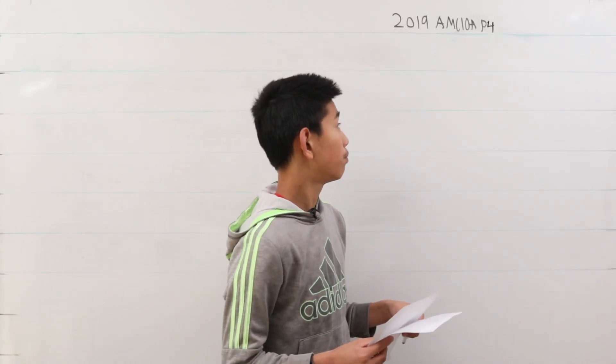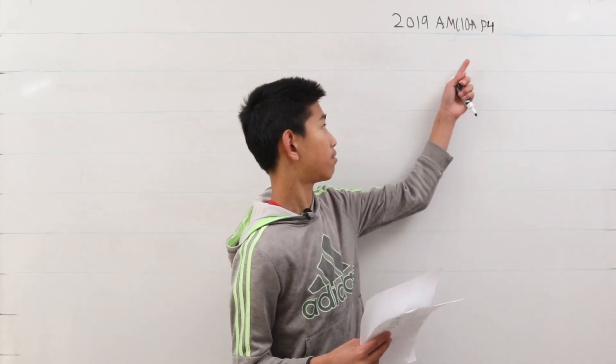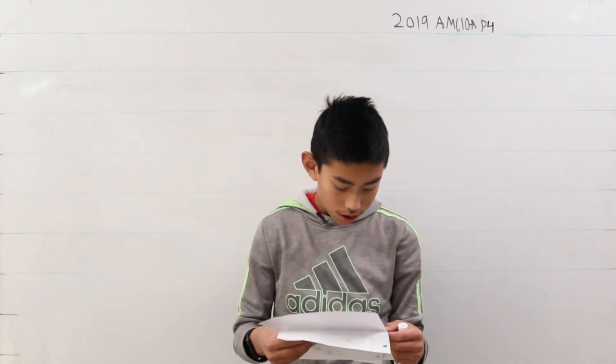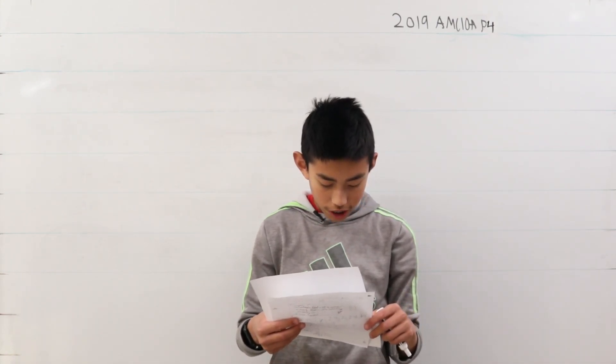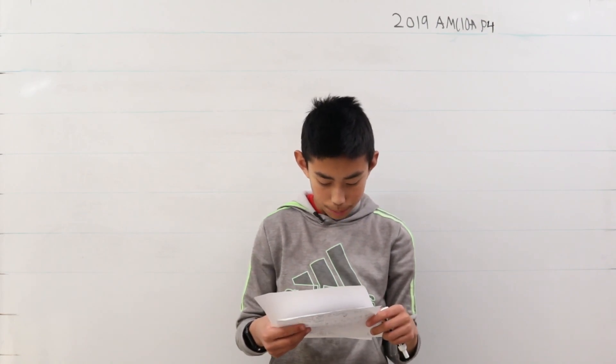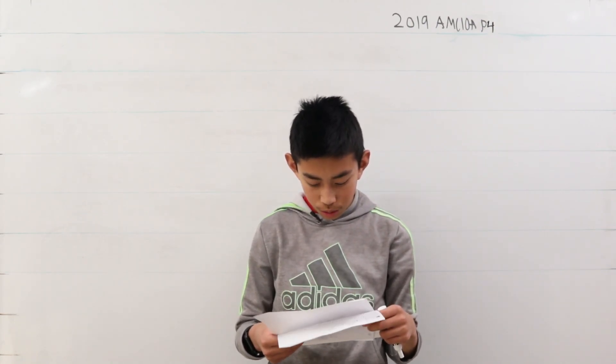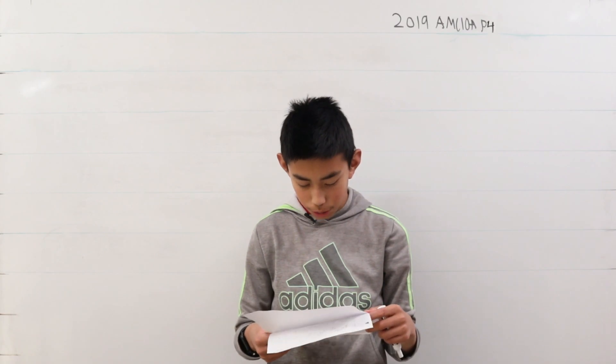We're solving problem 4 from the AMC 10A from 2019. A box contains 28 red balls, 20 green balls, and 19 yellow balls.